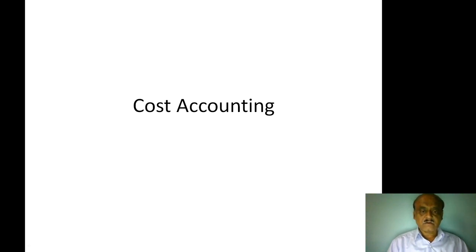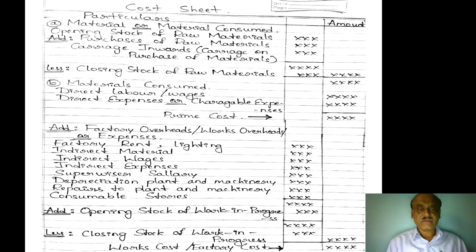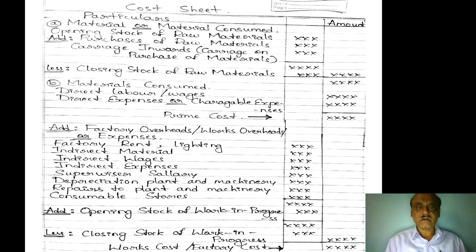Dear students, today we shall discuss another aspect of cost accounting, that is a cost sheet — preparation of cost sheet. As you know, one of the important objectives of cost accounting is to ascertain the cost, and cost can be ascertained by preparing the cost sheet. This is a statement of cost used to ascertain the total cost. It shows components of cost also and it helps in fixing the prices.